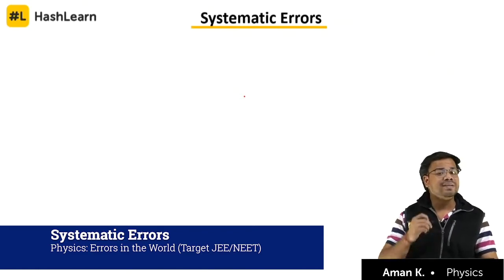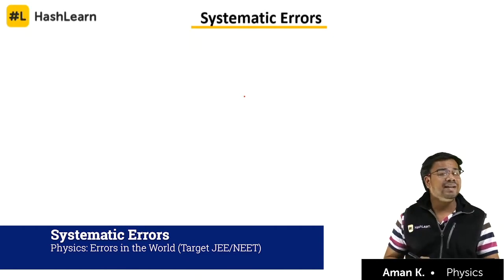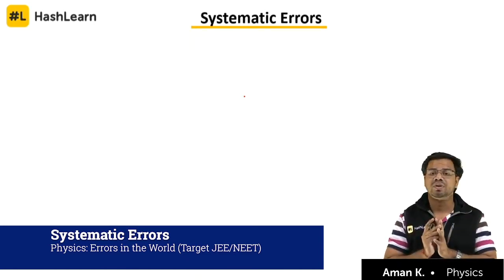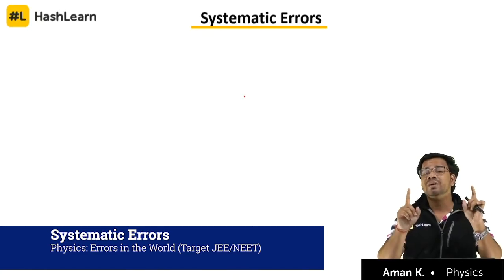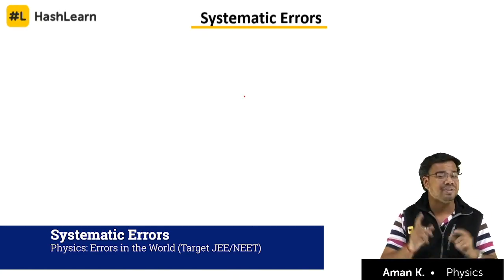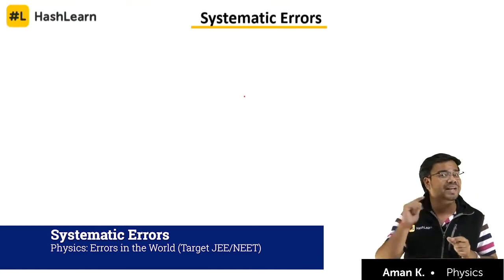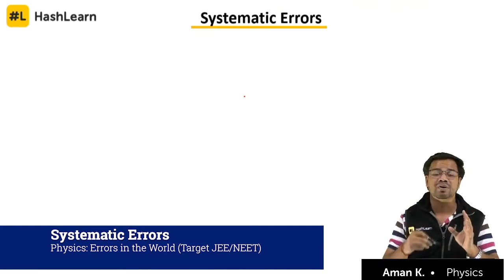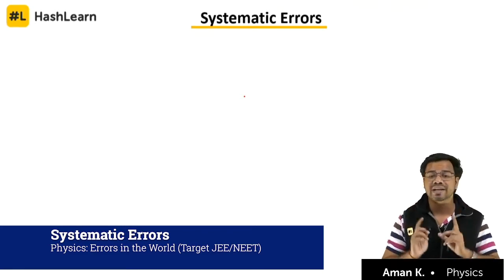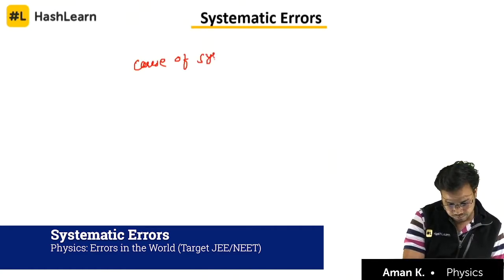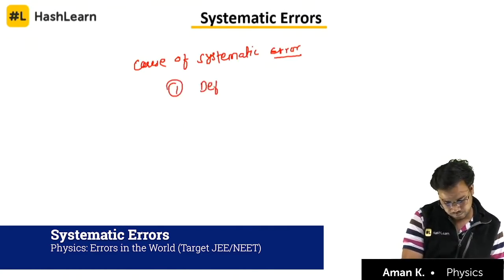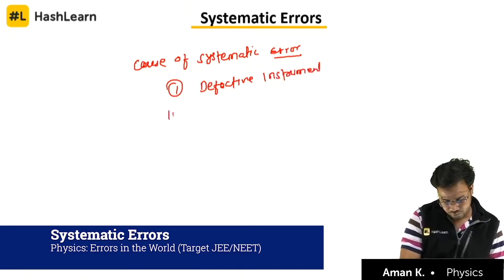What is systematic error? Systematic error is because of instrument defect. Suppose you are taking a reading and you are getting error in this reading because of the instrument. So the cause of systematic error can be of two types: either it is because of a defective instrument or it is because of defective setting of the instrument.